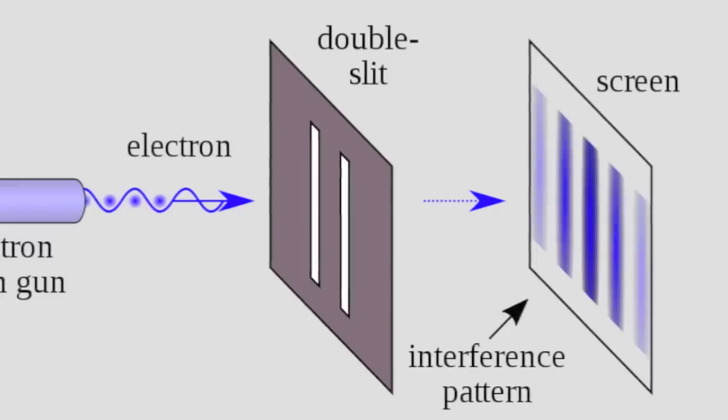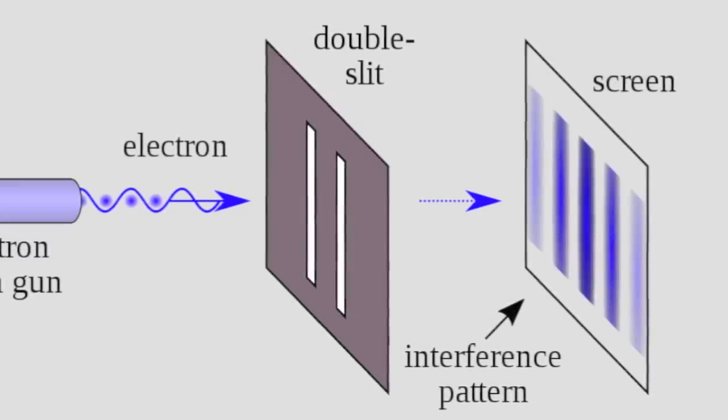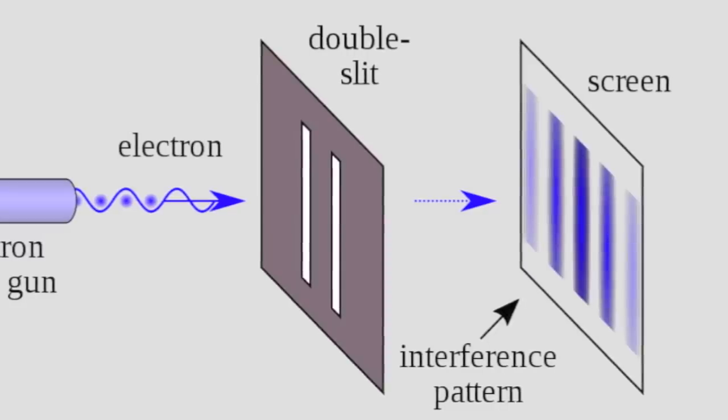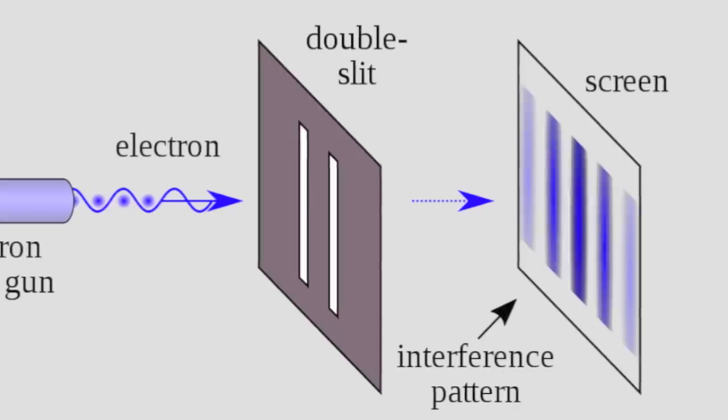Wait, it gets weirder still. As soon as you set up a detector to track the particle, the interference pattern disappears, and the particle only goes through one slit.